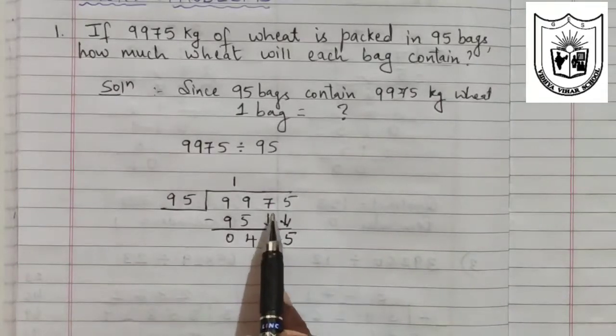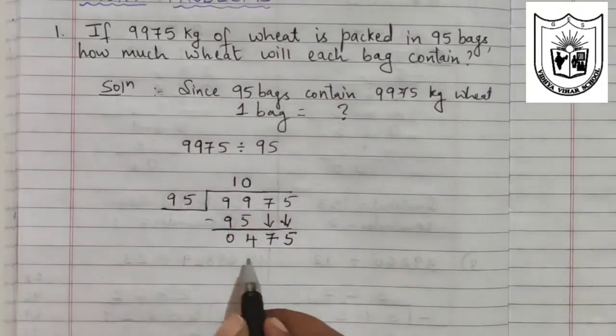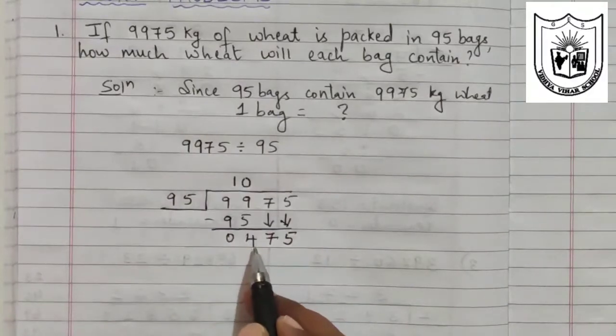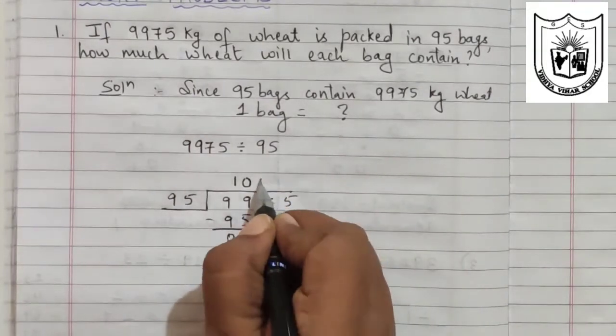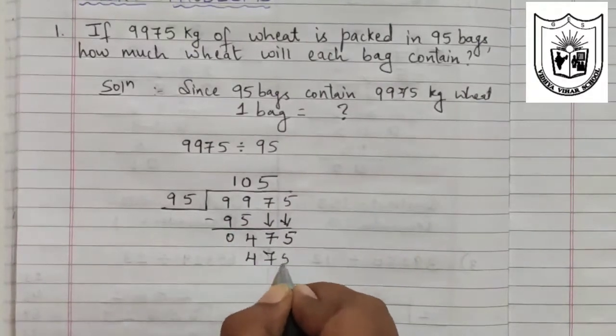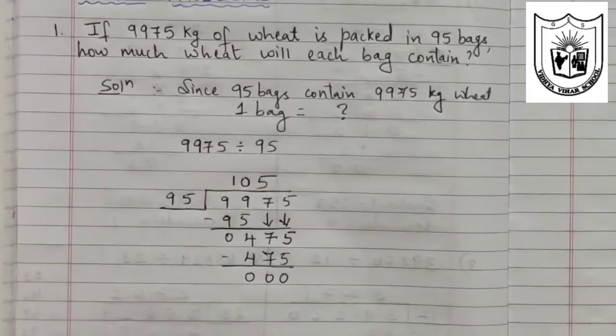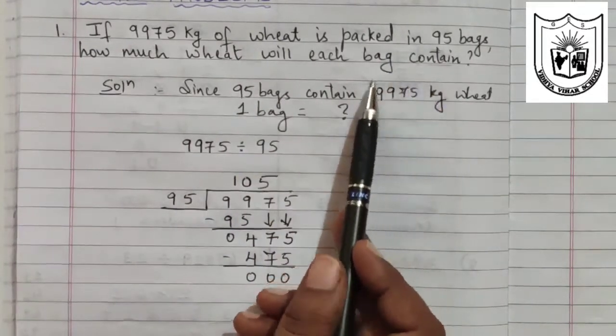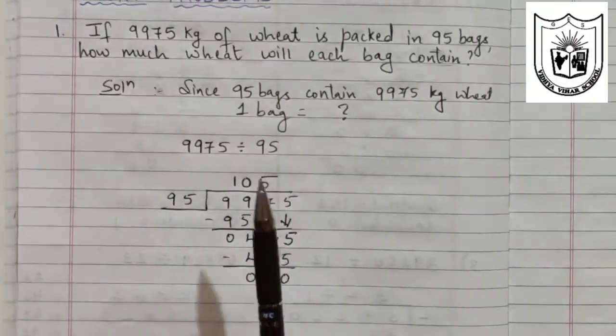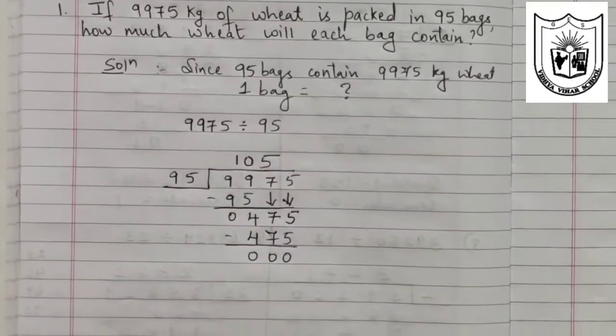Remember students, whenever you bring two numbers together down, we have to put 0 here. So now with 95, you multiply and check if you get 475 or less than 475. So 95, 5 is 475. So subtract. Remainder will be 0. So if 95 bags contain this weight of wheat, that means one bag will contain 105 kilogram of wheat.